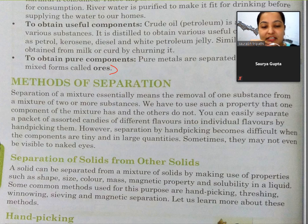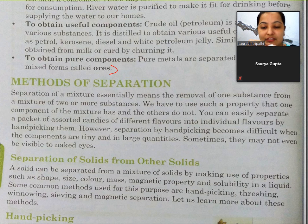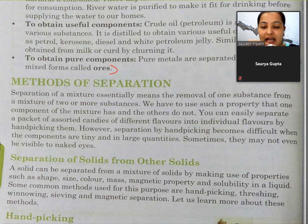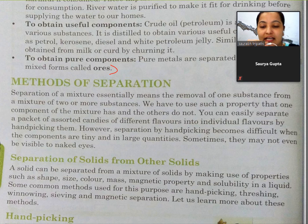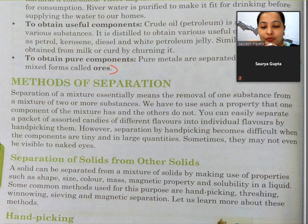Separation kya hota hai? Ek mixture mein se ek component ko alag karna - do ya do se zyada chizhoon ka jo mixture hota hai, unme se chizhoon ko alag-alag karna. Woh hota hai separation. We have to use such a property that one component has and the others do not - aur unho dono ko separate kiya jata hai. Assorted candies means ek packet jis mein bhohut sari alag-alag tariky ki candies hain. Unko hum unke flavors ke according individually alag kar sakte hain by handpicking - haat se uthha karke unko alag karna.